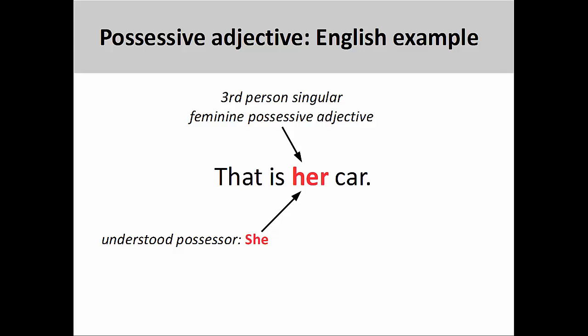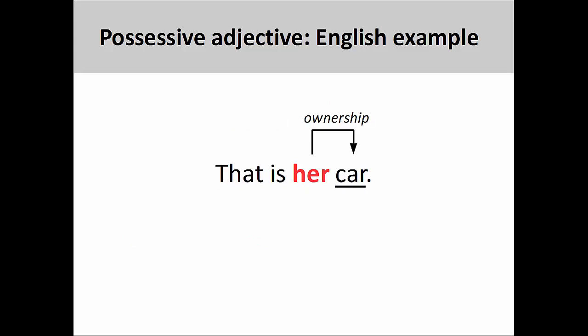In English, a possessive adjective shows ownership of something or a relationship between things. The possessive adjective must agree with the number, person, and, when applicable, gender of the possessor. For example, in the sentence you see on the screen, 'her' is a third person singular feminine possessive adjective that agrees with an understood person owning the car — 'she,' a third person singular personal pronoun. Another important point is that possessive adjectives must be placed before the thing that is being possessed. In this sentence, 'her' comes before 'car,' indicating ownership of the vehicle.